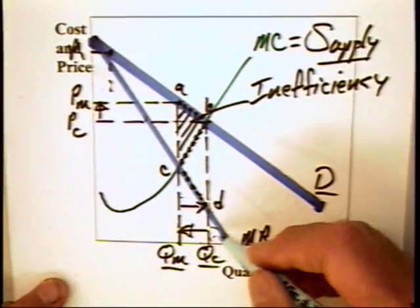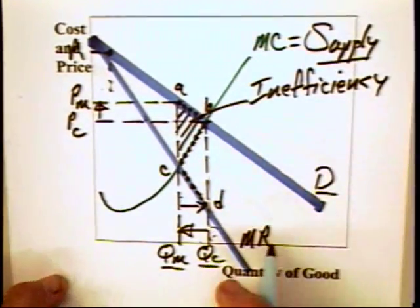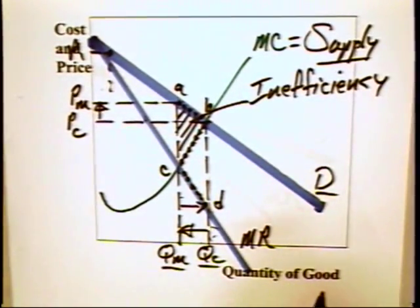And we will get all of these benefits, but each individual consumer can probably say, my contribution to getting the monopolist to expand production can be so small that I need not make it. And as a consequence, the monopolist might not be persuaded to move from QM to QC.